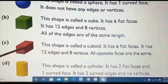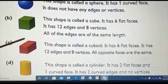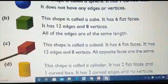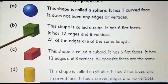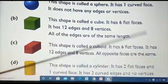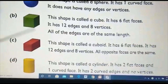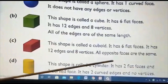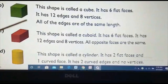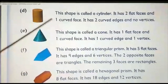The next solid is called a cuboid, which is the three-dimensional shape of a rectangle. It also has six flat faces, 12 edges, and 8 vertices — same as a cube. The difference is that in a cuboid, opposite faces are the same, whereas in a cube all faces are equal.